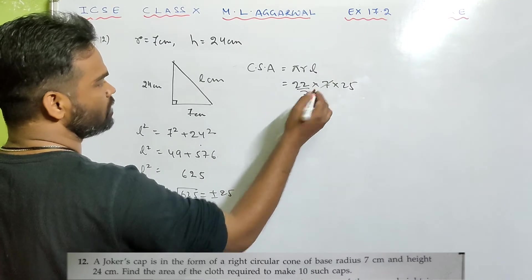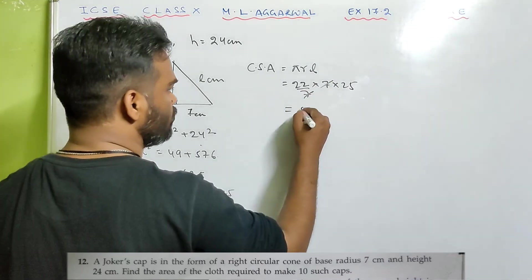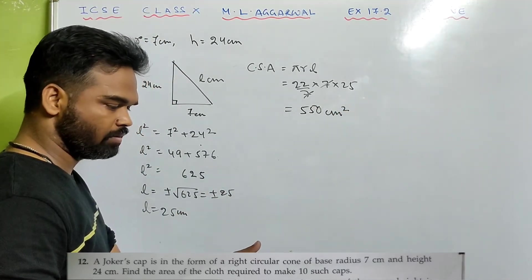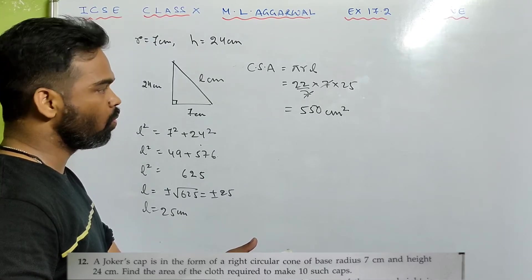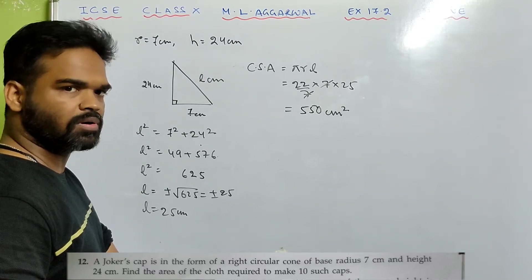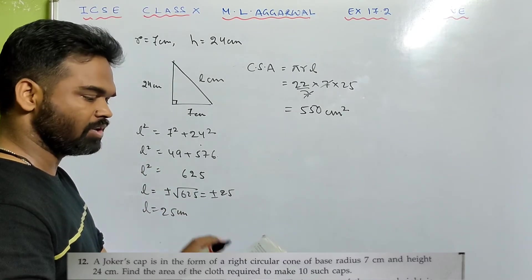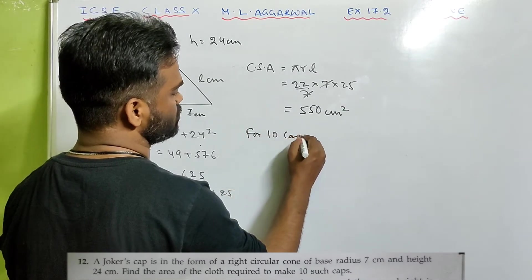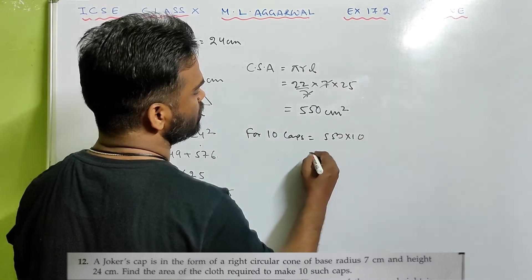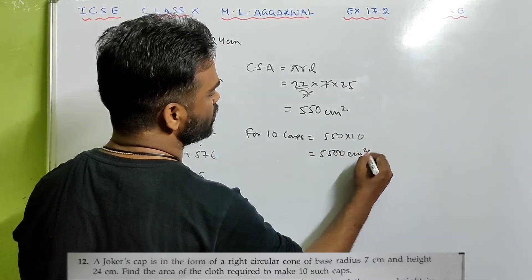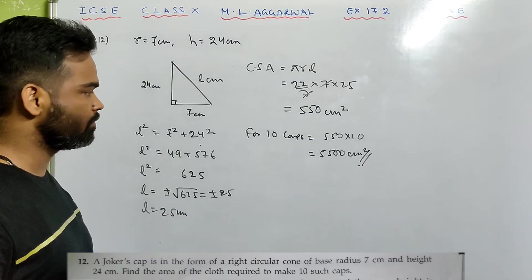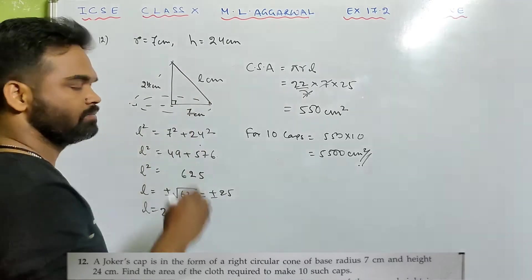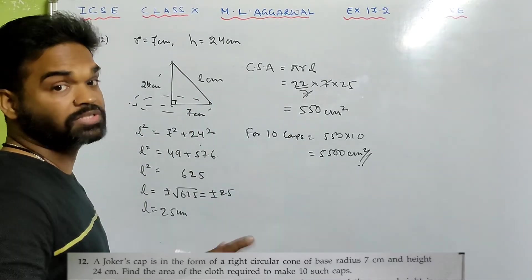7 cancels out: 22 × 25 = 550 centimeter square. That is the curved surface area of 1 cap, so this much cloth is required for 1 cap. For 10 caps: 550 × 10 = 5500 centimeter square. Remember: area of cloth required means CSA; calculate CSA and multiply by 10.